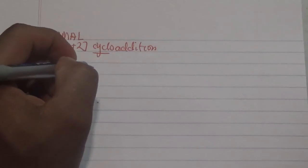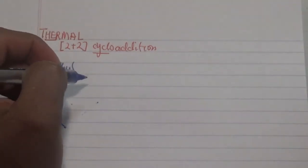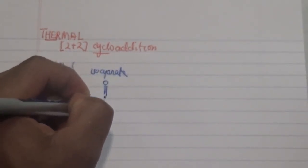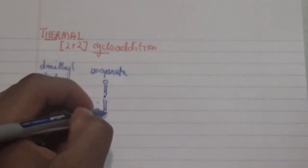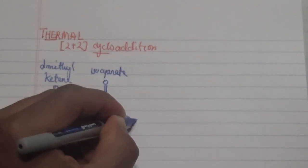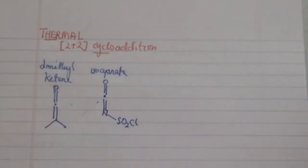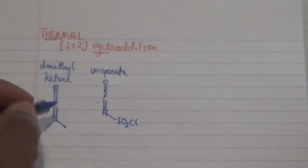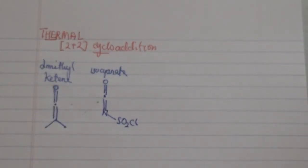We have another species which is also an electrophile: an isocyanate. The isocyanate has a structure similar to dimethyl ketene, but the difference is that the carbon double-bonded to oxygen is also double-bonded to a nitrogen, and that nitrogen is attached to an R group. Both of these species are electrophilic and can react with a specific alkene.